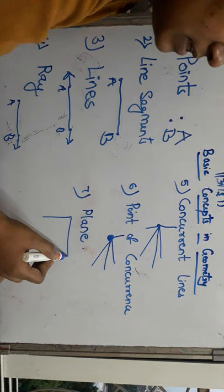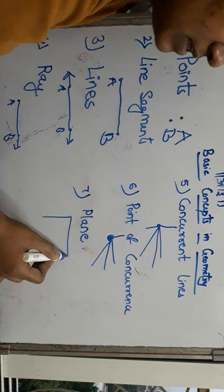Next is plane. Plane is a flat surface area. For example, this blackboard is a plane. Example: blackboard is a plane.